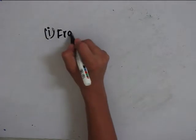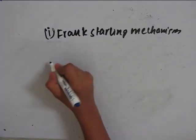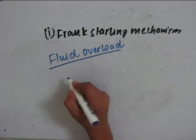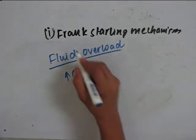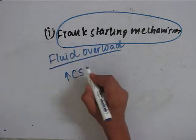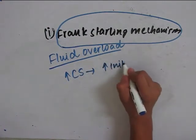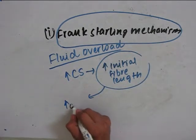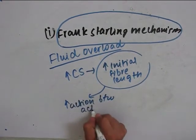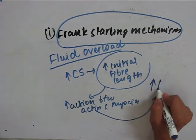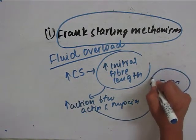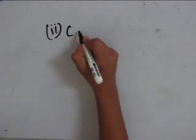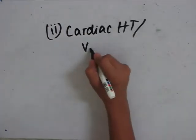The first one is the Frank-Starling mechanism. Fluid overload is one of the causes of CHF. When there is fluid overload, there is increase in the chamber size. According to the Frank-Starling mechanism, when there is increase in chamber size, there is increase in initial fiber length. When there is initial fiber length, there is increased interaction between actin and myosin. Hence, there is increased force of contraction, which can maintain the arterial pressure and organ perfusion.